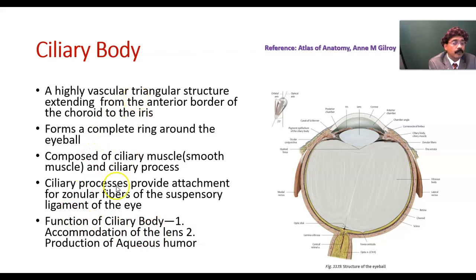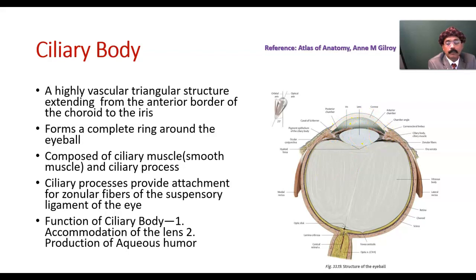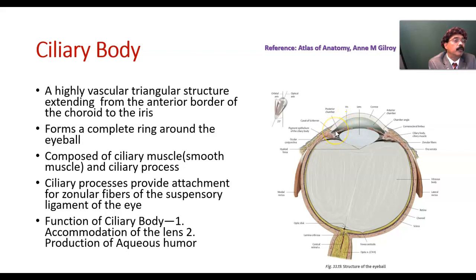The ciliary body also produces aqueous humor, because the ciliary body contains blood vessels and a lot of capillaries. This is essential for production of aqueous humor, which occupies these spaces. It is again reabsorbed through the canal of Schlemm. If there is any problem in reabsorption or overproduction, then there may be glaucoma.